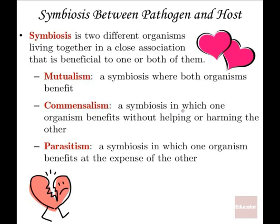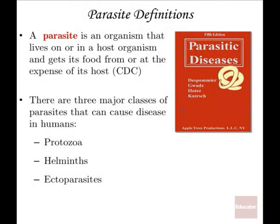The definition of parasitism is where one species of the two benefits from the relationship, and the other member is actually harmed — it's at the expense of the other species. A parasite is an organism that lives on or within a host organism, and the parasite gets its food from the host at the expense of the host. There are three major classes of parasites that cause disease: protozoa, helminths — the more scientific name for worms — and insects, which are called ectoparasites.